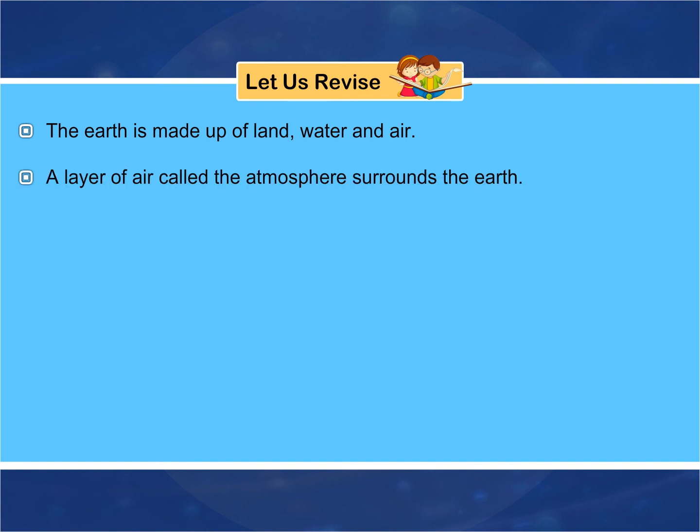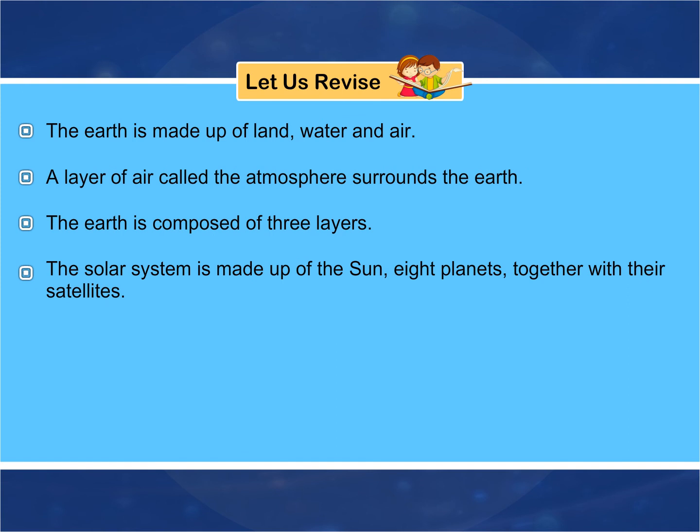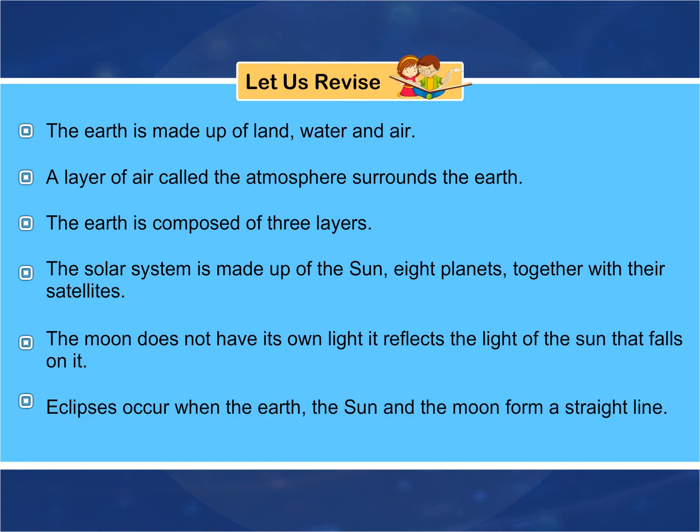Let us revise. The earth is made up of land, water and air. A layer of air called the atmosphere surrounds the earth. The earth is composed of three layers. The solar system is composed of the sun, eight planets, together with their satellites. The moon does not have its own light. It reflects the light of the sun that falls on it. Eclipses occur when the earth, the sun and the moon form a straight line.